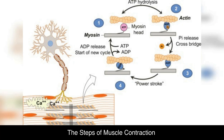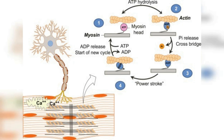The steps of muscle contraction. During muscle contraction, a series of events occurs that results in the shortening of muscle fibers and the generation of force. The process begins with depolarization of the muscle cell membrane, which is initiated by the arrival of an action potential at the neuromuscular junction. This depolarization spreads down the length of the muscle fiber, causing the release of calcium ions from the sarcoplasmic reticulum.